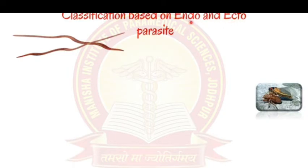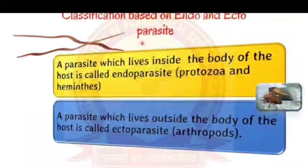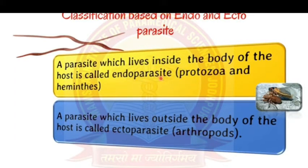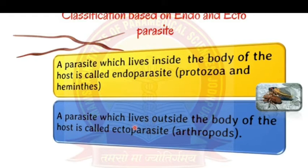Classification based on location: endoparasites live inside the body of the host — protozoa and helminths live inside our intestine, blood, or other organs. Ectoparasites live outside the body of the host, such as lice in our hair or ticks on dogs.